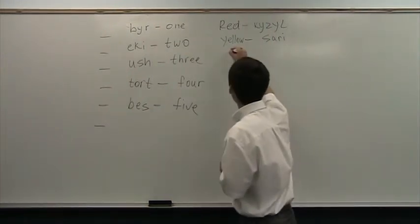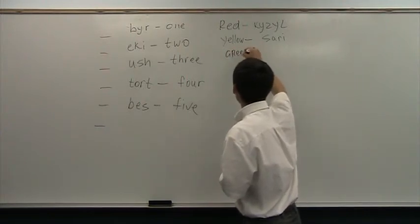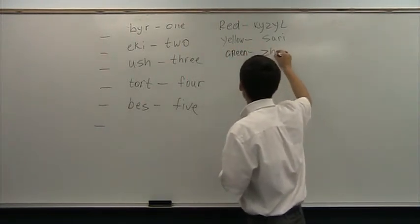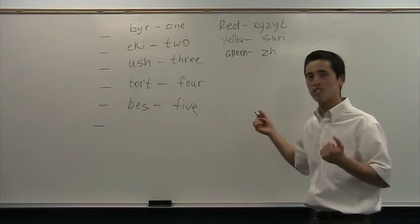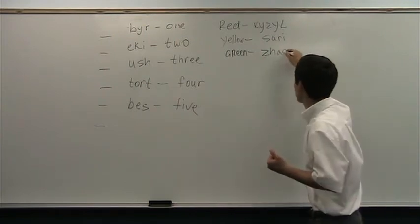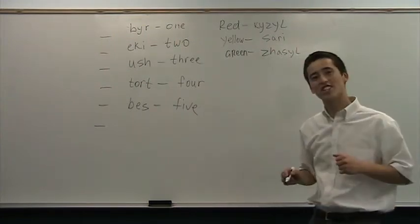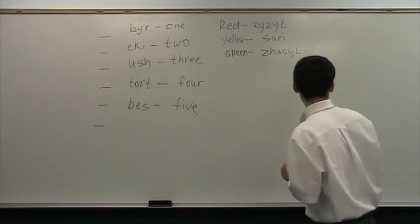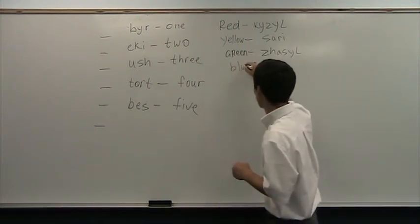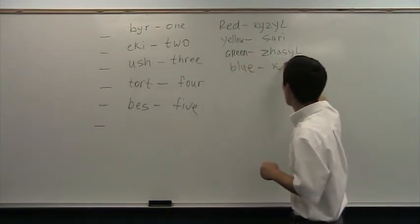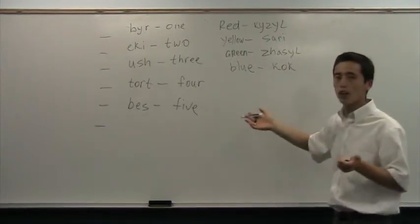And the green. So as I mentioned, Z-H gives a ž. J'a-sıl. J'a-sıl. And next is blue. Cook. Like cock, but cook.